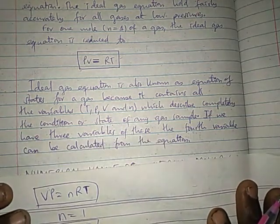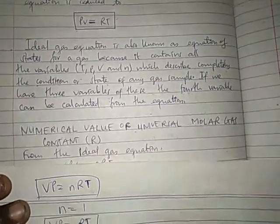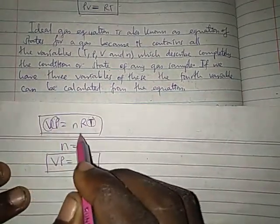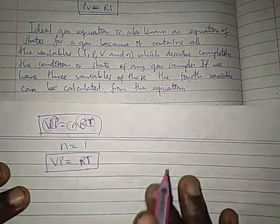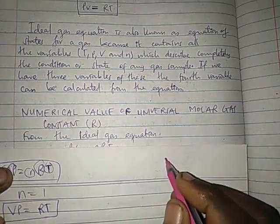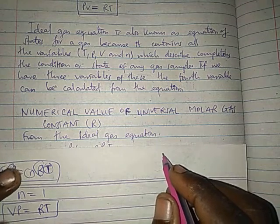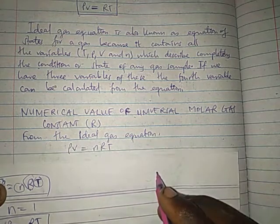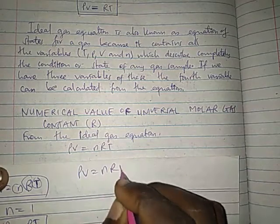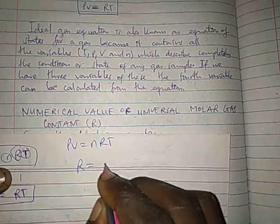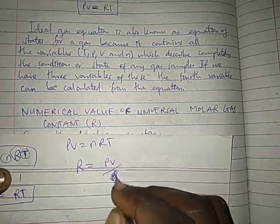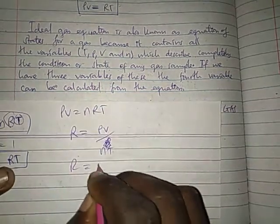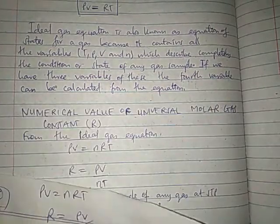If we have three of these variables — temperature, pressure, volume, or number of moles — the fourth can be calculated from the equation, since R is known. R is known as the universal molar gas constant. Let's see how we calculate the numerical value of R. From PV equals nRT, making R the subject gives R equals PV divided by nT.